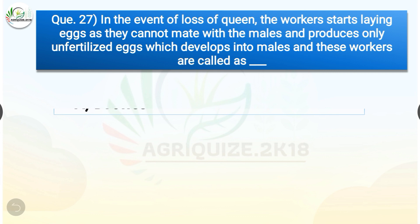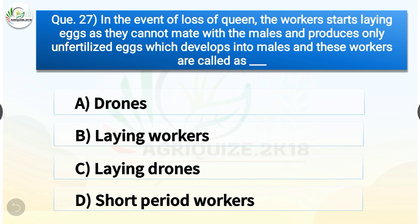Question number twenty-seven: In the event of loss of queen, the workers start laying eggs as they cannot mate with the males and produce only unfertilized eggs which develop into males. These workers are called what? The correct answer is option B — laying workers. So in the event of loss of queen, the workers start laying eggs and produce only unfertilized eggs which develop into males; these workers are called laying workers.